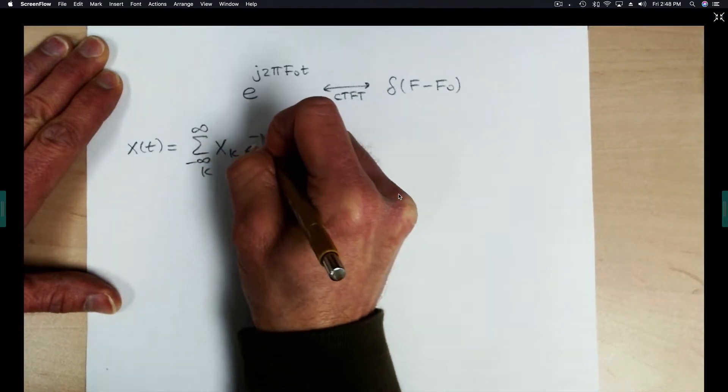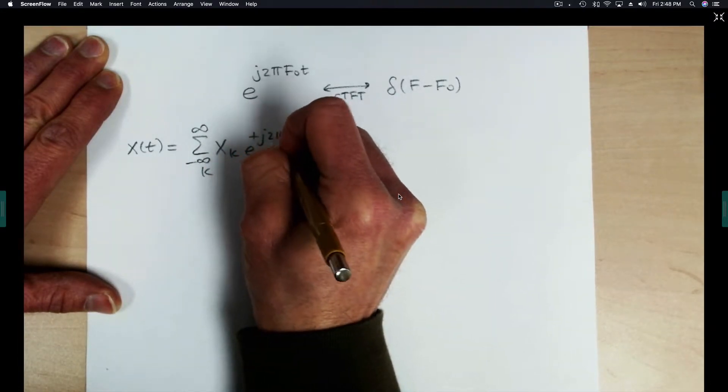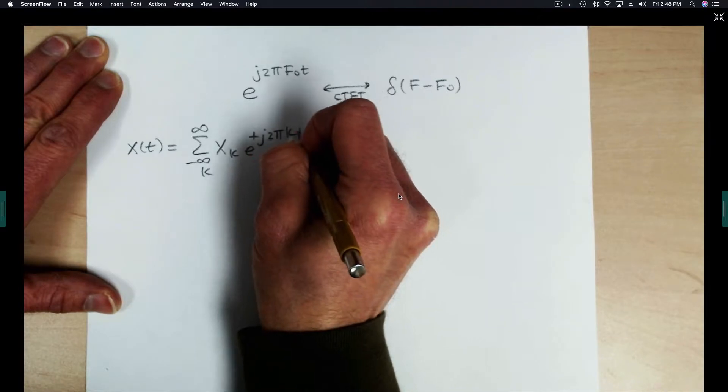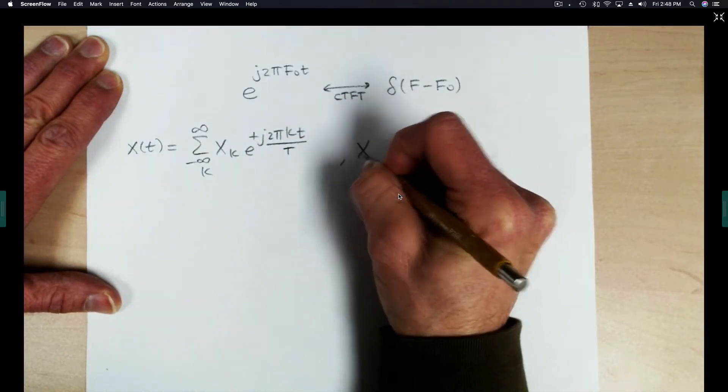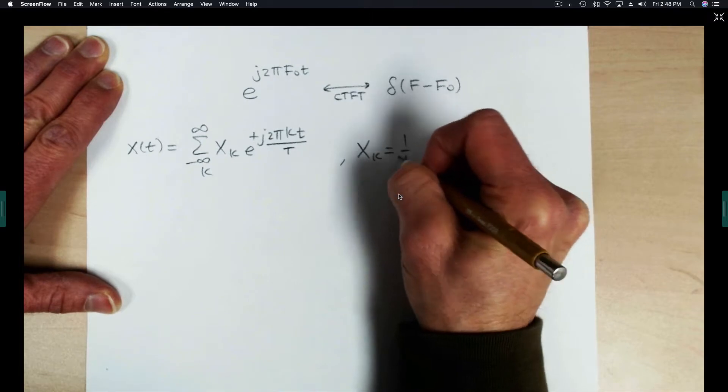Xk are the coefficients in the Fourier series expansion, and they can be calculated using the well-known formula.